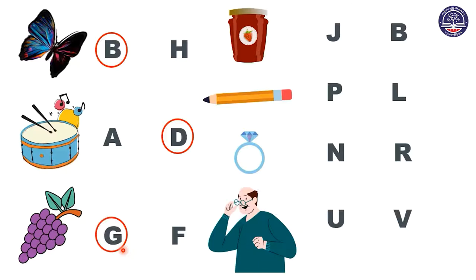Great job, everyone. Now let's move on to the other side. What picture is this? This is a jam. Does jam start with letter G, J, or F, B? J, jam starts with letter J. Correct. So let's circle letter J.